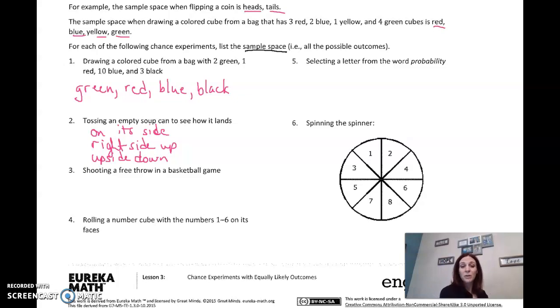How about shooting a free throw in a basketball game? What outcomes could happen? Well, we're either going to make the shot—it's going to be a made shot—or a missed shot. You either make it or you don't make it.